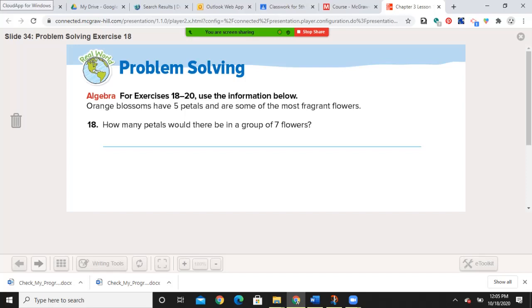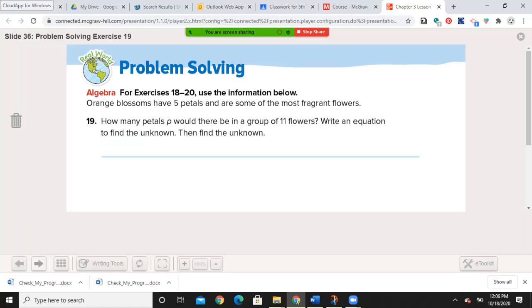Use the information below. Orange blossoms have 5 petals and are some of the most fragrant flowers. All right. So how many petals would be in a group of 7 flowers? Go ahead and pause the video. Welcome back. Let's see how you did. 35. 5 times 7. 7 flowers or 7 blossoms. 5 petals on each. Next one. How many petals would there be in a group of 11 flowers? Write an equation to find the unknown and then find it. Go ahead and pause the video. Welcome back. Let's see how you did. 5 times 11 is P. P equals 55. 55 petals.